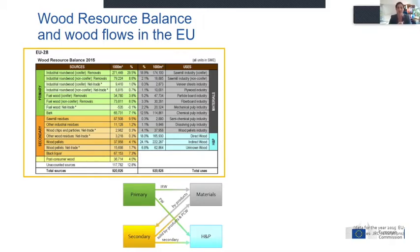This is EU28, so the UK is included. The first message in the report is that there is a gap between the sources and the uses. We know the gap is also due to uncertainty in the coefficients we're applying, and we're trying to be transparent about that. The gap is significant — we're talking about almost 13 percent unaccounted sources.